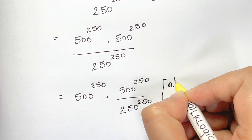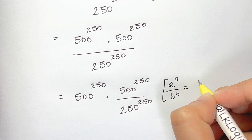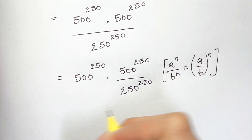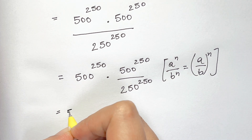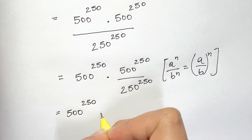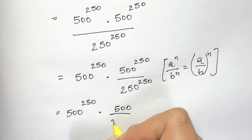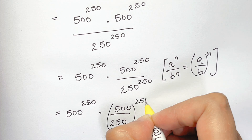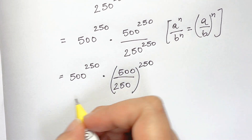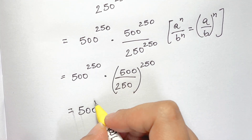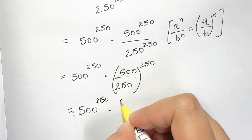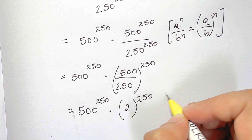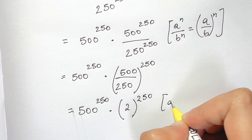We can use this law: a to the power of n over b to the power of n equals a over b, whole to the power of n. Applying that, we get 500 to the power of 250 times 500 over 250, whole to the power of 250, which equals 500 to the power of 250 times 2 to the power of 250.